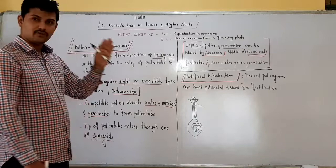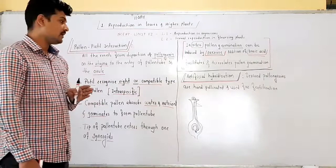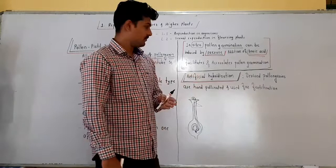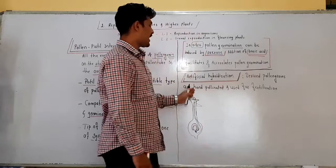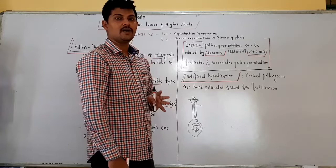All the events from the deposition of the pollen grain on the stigma to the entry of the pollen tube through one of the synergids can be considered as pollen-pistil interaction. We can also perform the artificial hybridization method for formation of hybrid seeds. In artificial hybridization, two different plants of the same species are required.